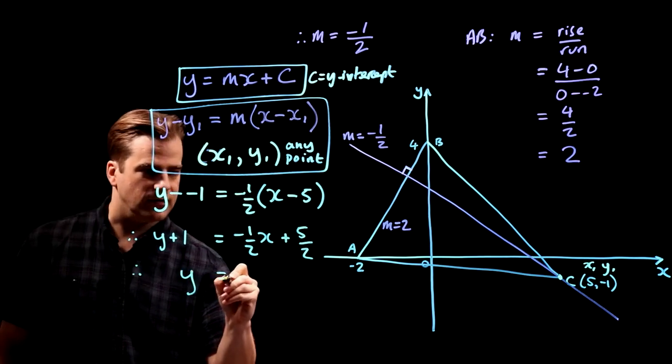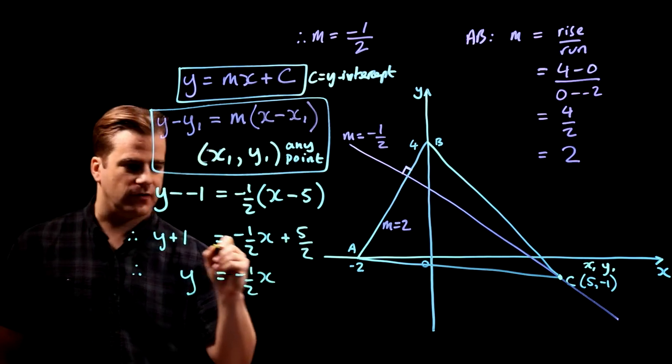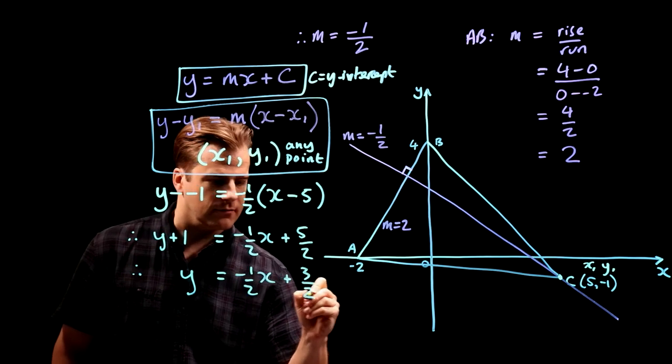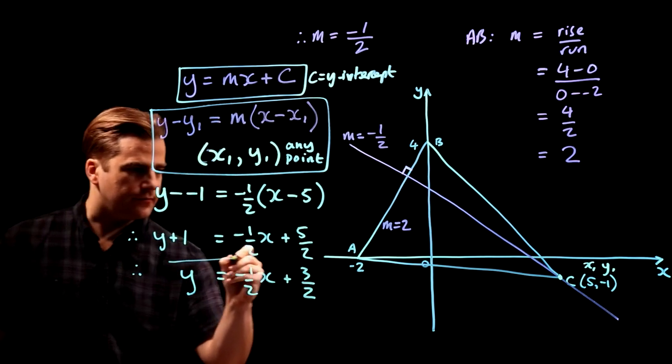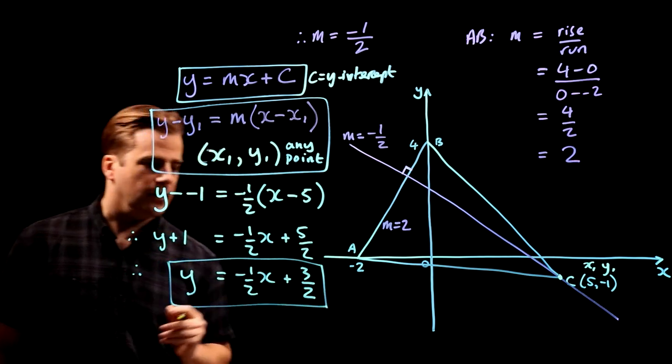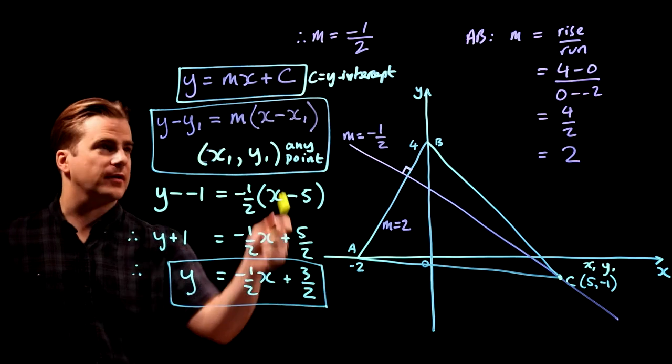We get y equals minus a half x. 5 over 2 minus 1 is 3 over 2. And that's it. That's the equation of our line.